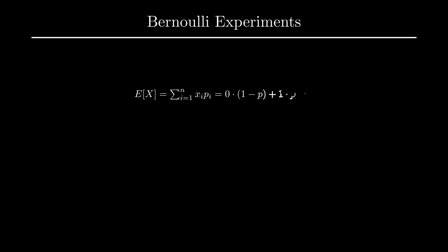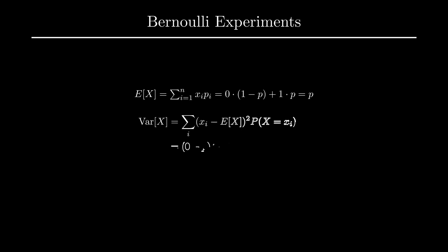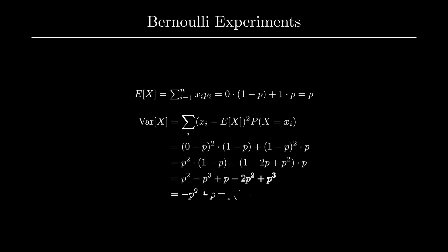We can compute the expected value of a Bernoulli experiment in the same way we would for any distribution. In this way, we arrive at an expected value of p. Variance is defined as the sum of x minus the expected value of x, squared, times the probability that x equals xi. With some simple algebra, we arrive at p times 1 minus p.